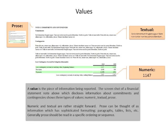Numeric and textual are rather straightforward — numbers and text. Prose, I want to go a little bit deeper into. Basically, prose can be thought of as information that has sophisticated formatting within it — for example, paragraphs, tables of information, lists of information, et cetera. Generally, prose is intended to be read in a specific order, so the sequencing or ordering of prose is important.